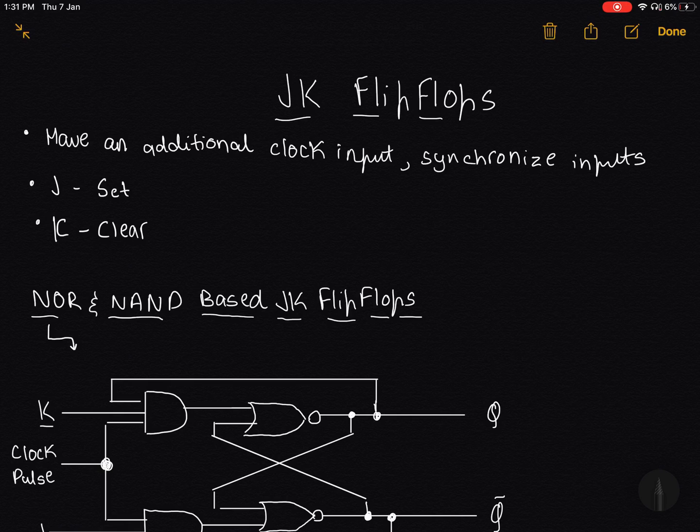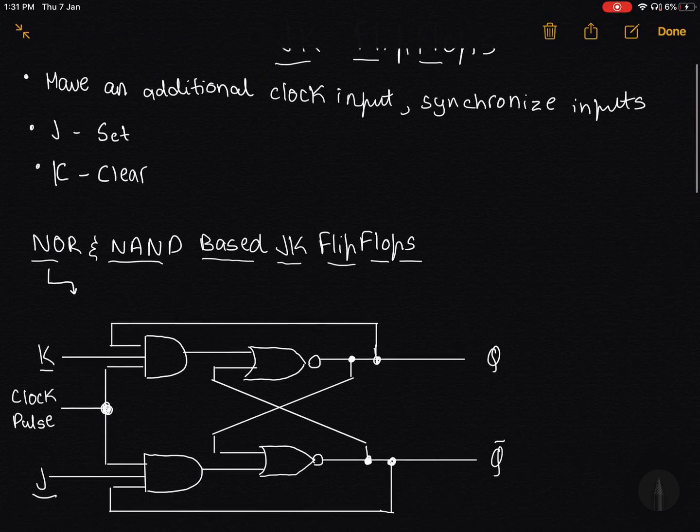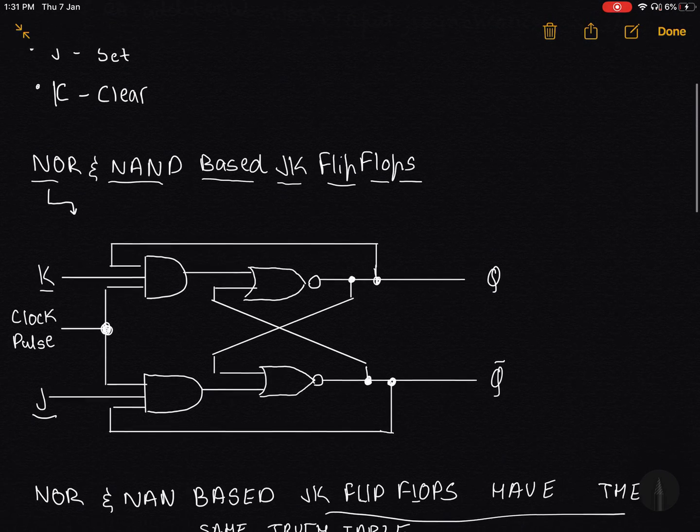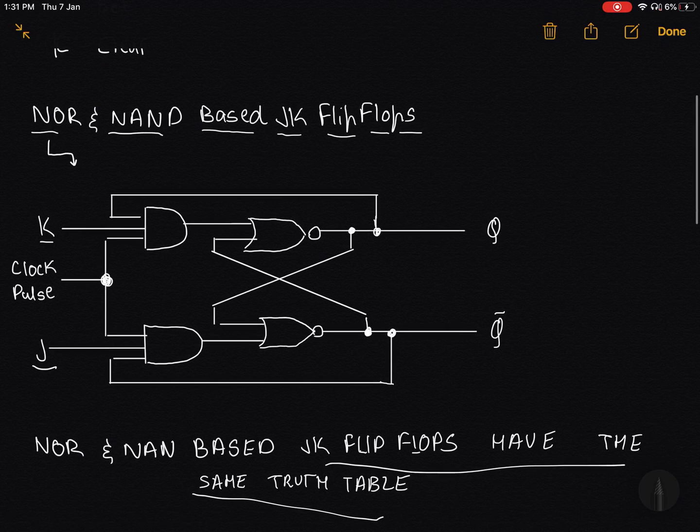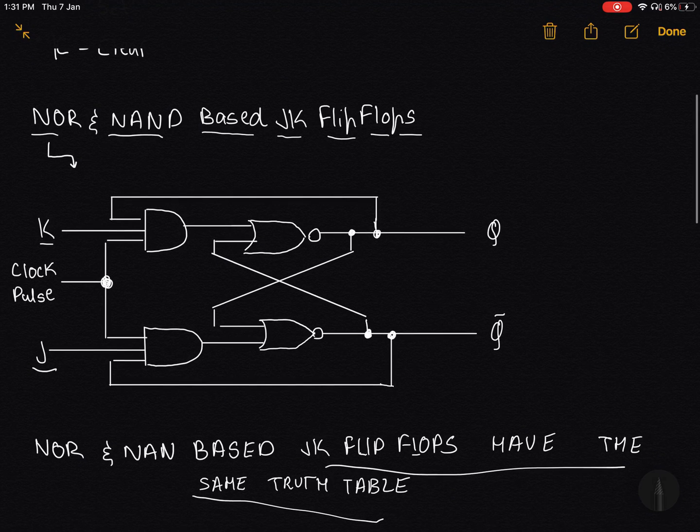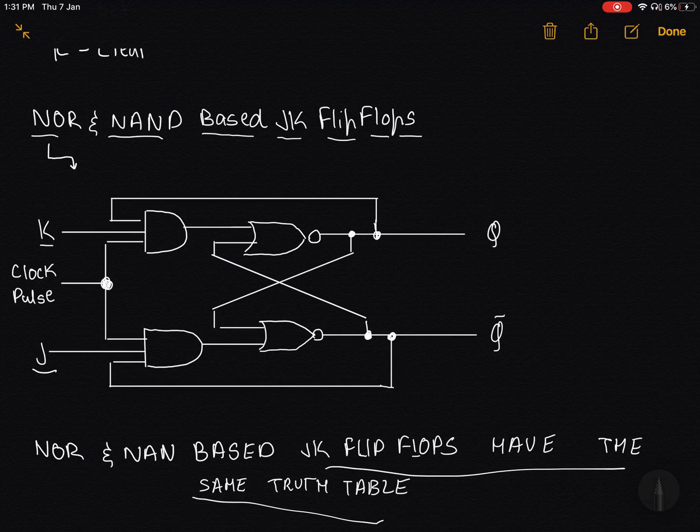JK flip flops are active high. So if my J is 1, then Q will be set to 1. And if my K is 1, then my Q will be cleared, so it will become 0. Now NOR and NAND based JK flip flops have the same truth table. They're really similar.